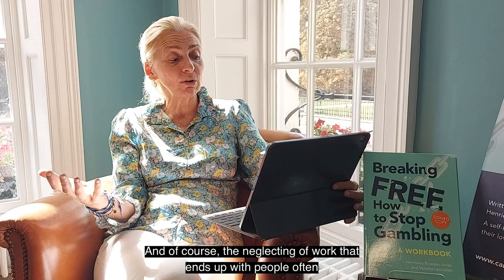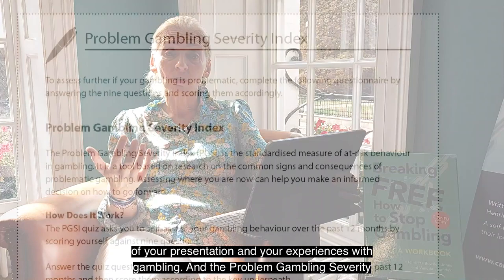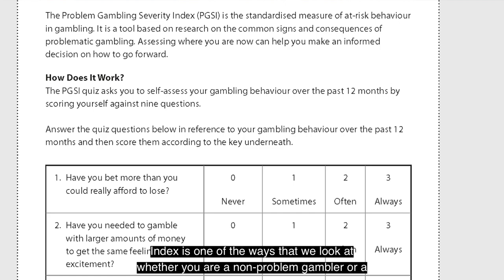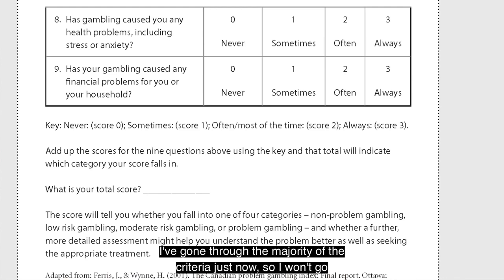In the book, we have ways of understanding the severity of your presentation and your experiences with gambling. The Problem Gambling Severity Index is one of the ways we look at whether you are a non-problem gambler, a low-risk gambler, moderate, or severe risk. I've gone through the majority of the criteria just now, so I won't go through that again.